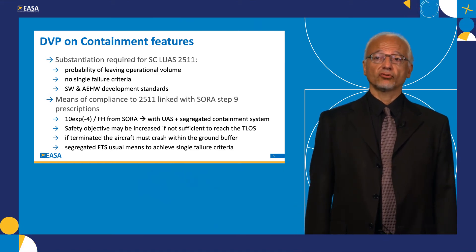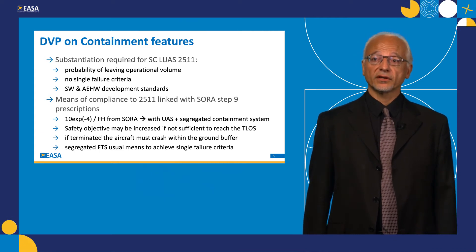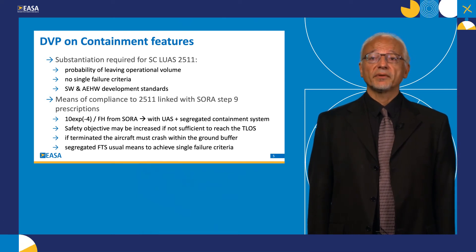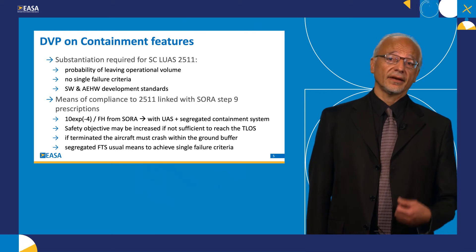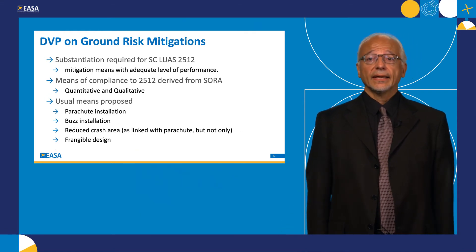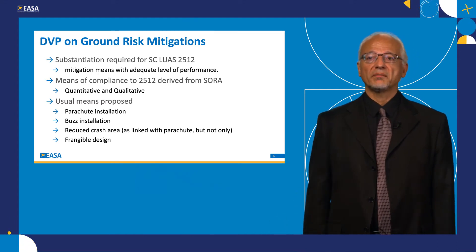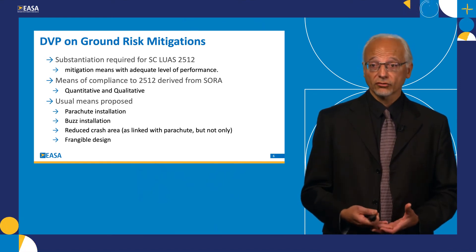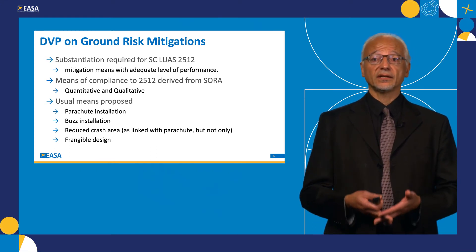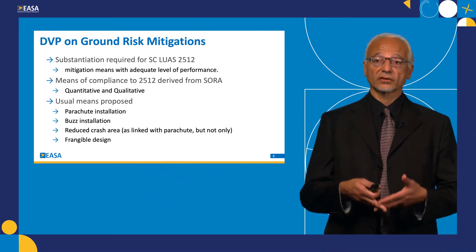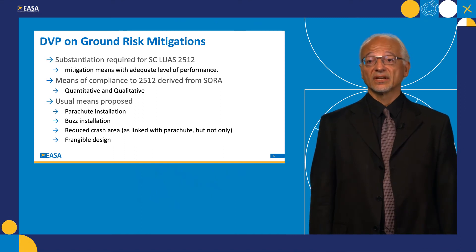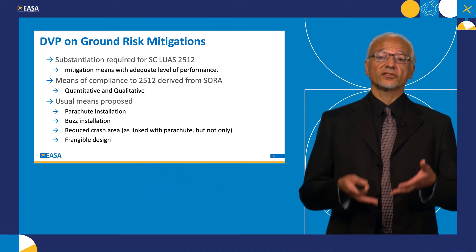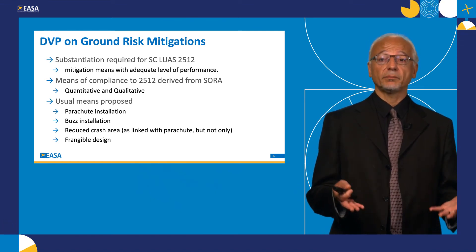The second possibility for a more limited design verification project is for ground risk mitigation. In this case, the only requirement triggered is 2512. Mitigation means must have an adequate level of performance. The means of compliance for these requirements are taken from the SORA and have both a quantitative and a qualitative part. The usual means proposed to meet these requirements by applicants are parachute installations, because we are talking about containment of the drone's dynamics — reducing kinetic energy so that the probability of causing a fatality is lowered. A parachute installation also typically reduces the crash area, further reducing risk. Sometimes a ballistic installation is proposed, and also frangible design — drones with a frangible design tend to transmit less kinetic energy to any people they may crash upon.